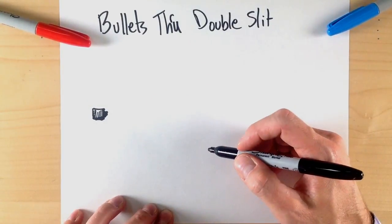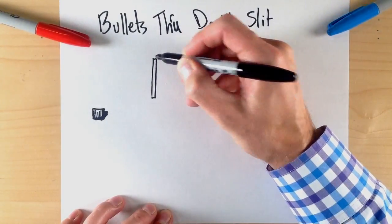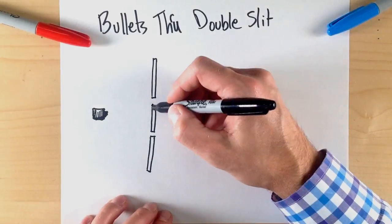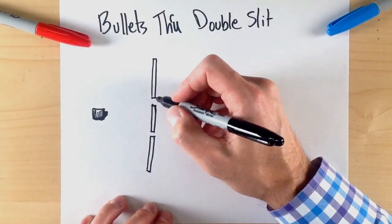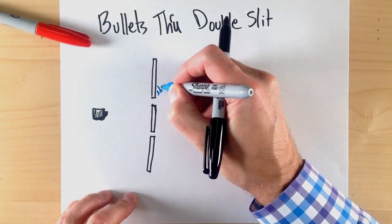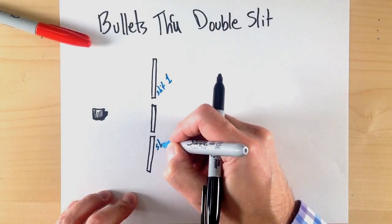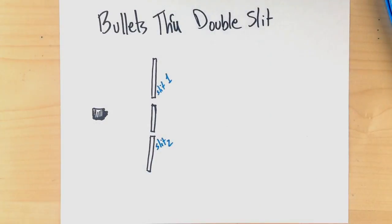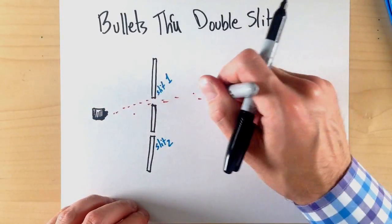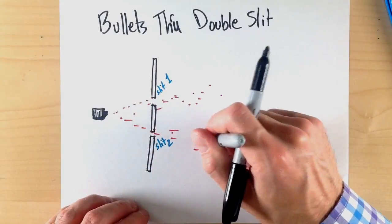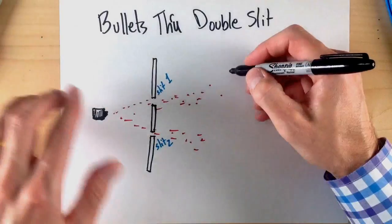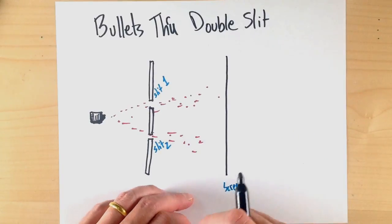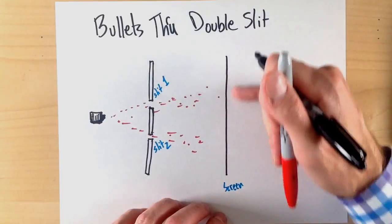This could be a gun shooting tennis balls. It could be a gun shooting bullets. Your book talks about bullets, so let's use that language. And let's suppose that we have a screen or a kind of wall or a shield where there are two slits in here. And this would be slit one, and this can be slit two.